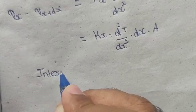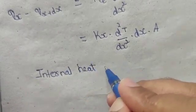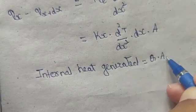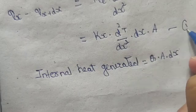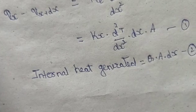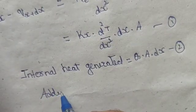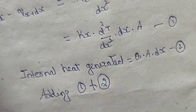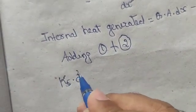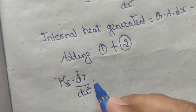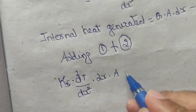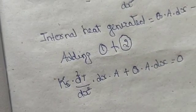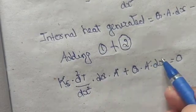The internal heat generated equals Q · A · dx. Taking this as equation 2 and the net heat transfer as equation 1, adding equations 1 and 2 gives: kx · d²T/dx² · dx · A plus Q · A · dx equals zero. The common terms A and dx cancel.